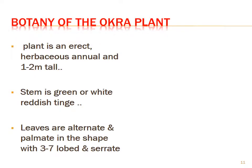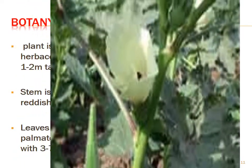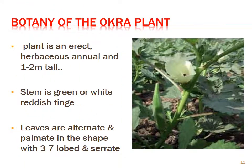Botany of the Okra plant: the plant is erect, herbaceous, annual, and 1 to 2 meters tall. The stem is green or white with a reddish tinge. Leaves are alternate and palmate in shape with 3 to 7 lobes and serrate margins.